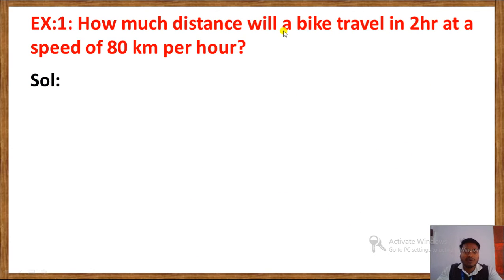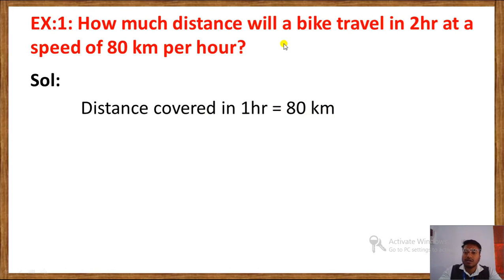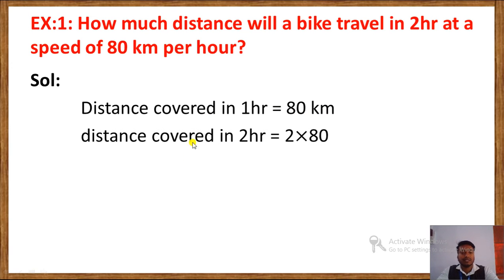Let's see an example: how much distance will a bag travel in 2 hours at a speed of 80 kilometres per hour? The distance covered in one hour equals 80 kilometres — that is the speed, 80 km/h. So the distance covered in 2 hours equals 2 into 80, that is speed into time.